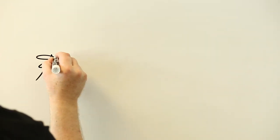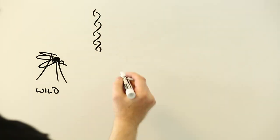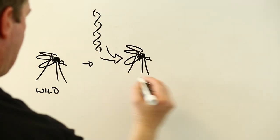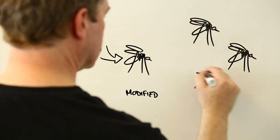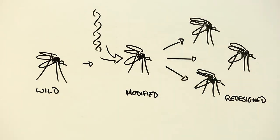Gene drives are designed to eliminate unwanted traits in insects and other animals. They work by pushing out genetic modifications through whole species until eventually every critter has been changed into something we have intentionally engineered.